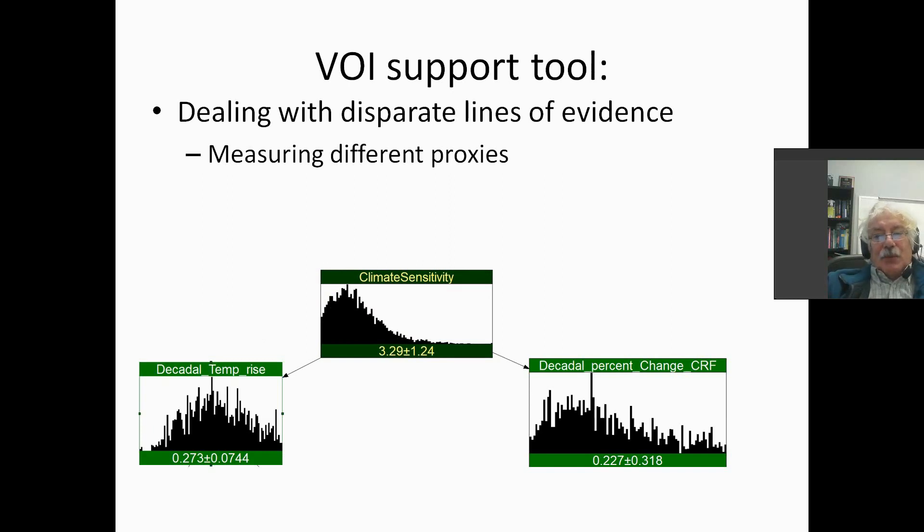The mean value is 3.29, the standard deviation is 1.24. Equilibrium climate sensitivity is the amount by which the global surface temperature of the Earth will rise as a result of doubling the atmospheric concentration of CO2. These are degrees centigrade.